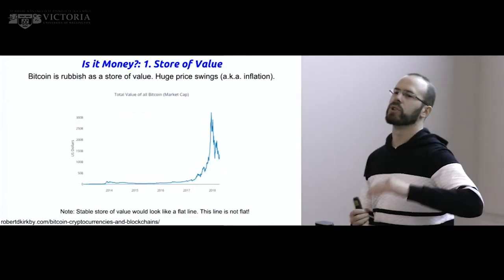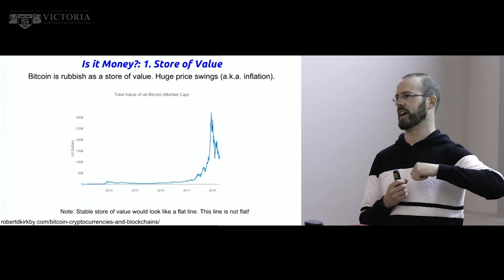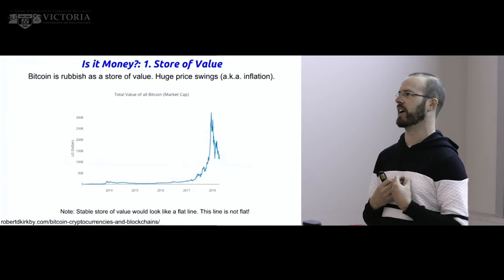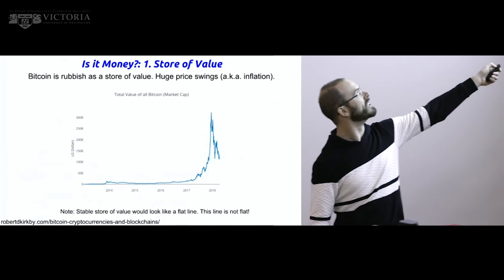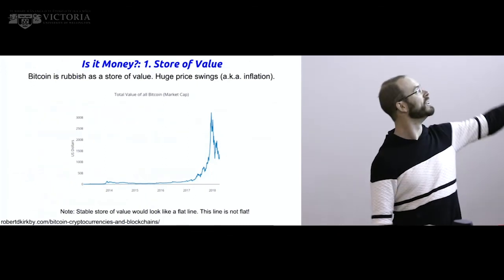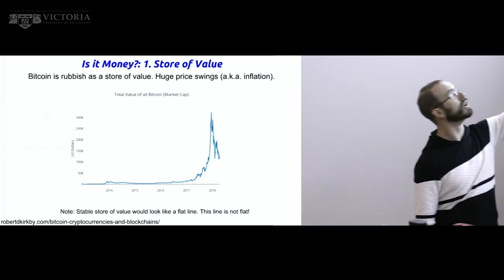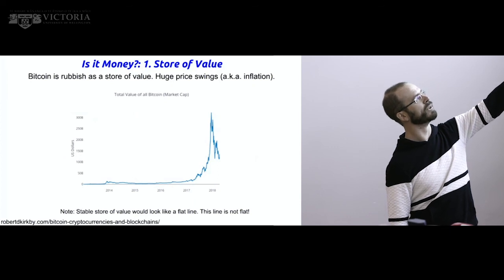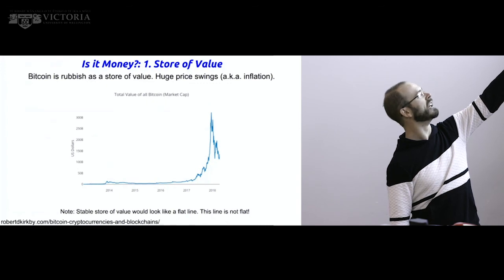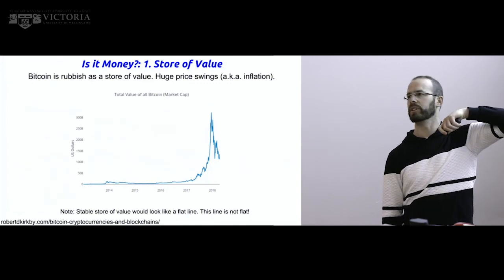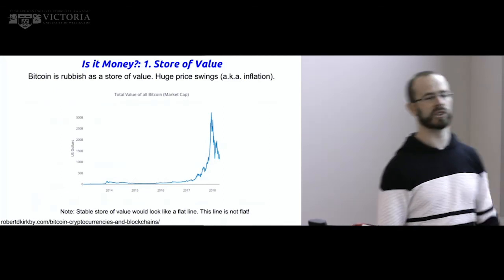Store of value: if Bitcoin were a good store of value, it would be worth roughly the same next year as it is today. I want money I can earn my salary in, leave in a bank account till next month, and know it'll be worth about the same. What you can see from the data does not look like a flat horizontal line. You can also see why it became such a big thing around end of 2017 — the price went up a lot. It's gone down a lot since; that spike is huge but looks tiny compared to the rest of the graph.